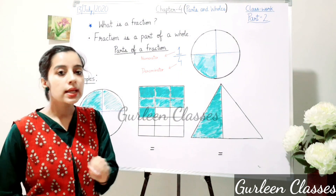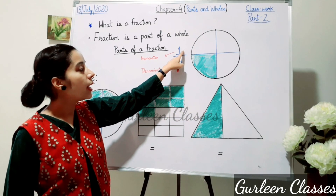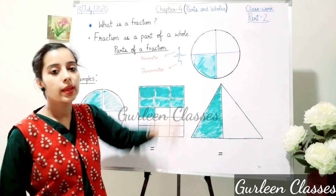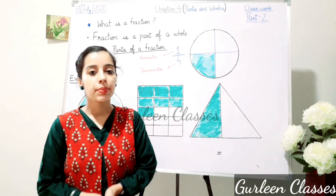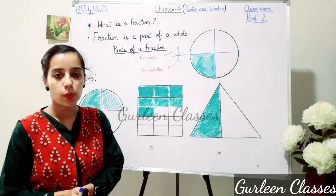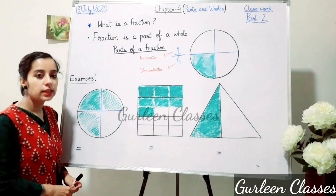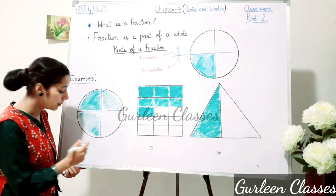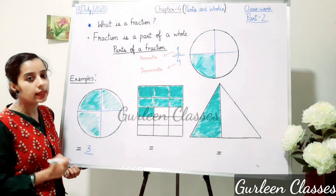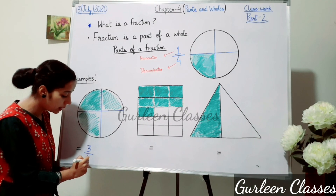So students, here in this circle the shaded part is 1 and the total parts written at the bottom is 4. Now let us do examples — what fraction does the colored part show? Here 3 parts are shaded, so 3 will be written in the numerator. And how many total parts are there? 4. So 4 is written in the denominator.